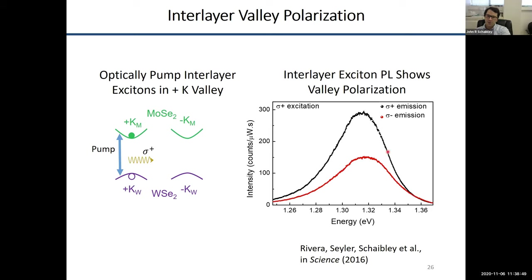The polarization degree is not a hundred percent — as I showed earlier for MoS2 — for a number of reasons, some understood and some not. One thing that is understood very well is that our angle alignment is not perfect. When assembling these heterostructures, we use an optical technique to identify the crystal axes and then do the stamping, but we're close to zero-degree twist — typically about one to two degrees off. That's really just a limitation of how good the graduate student is, to be honest. We have some that get very close to zero, but of course not exactly.